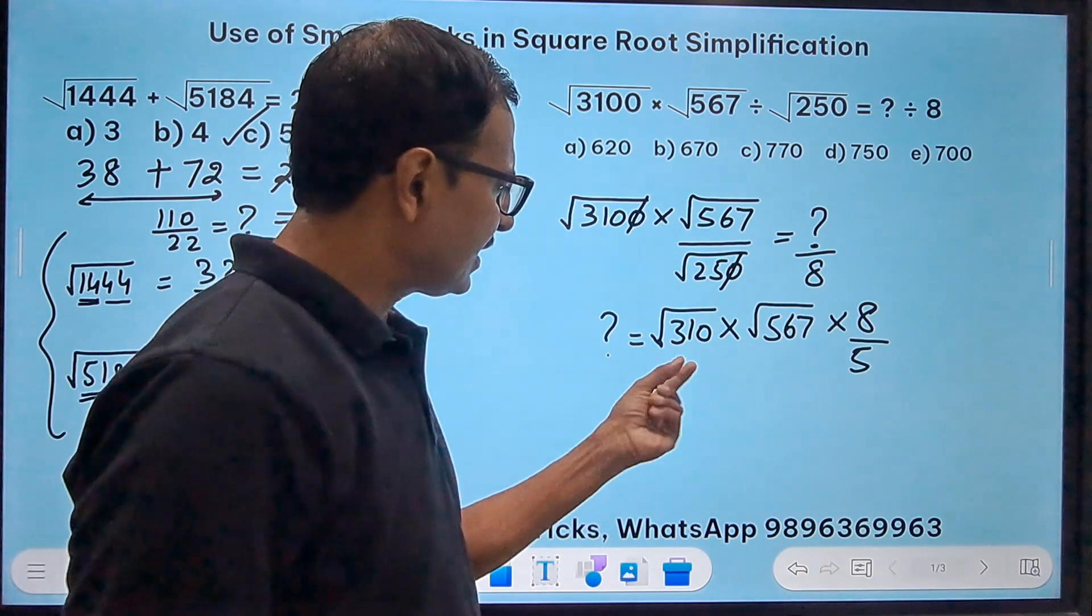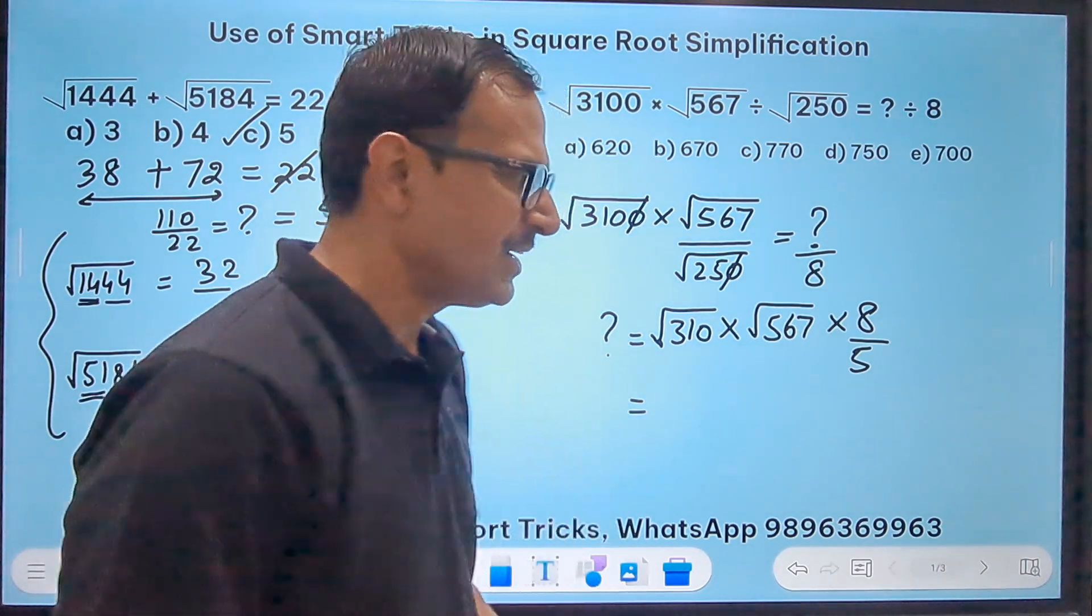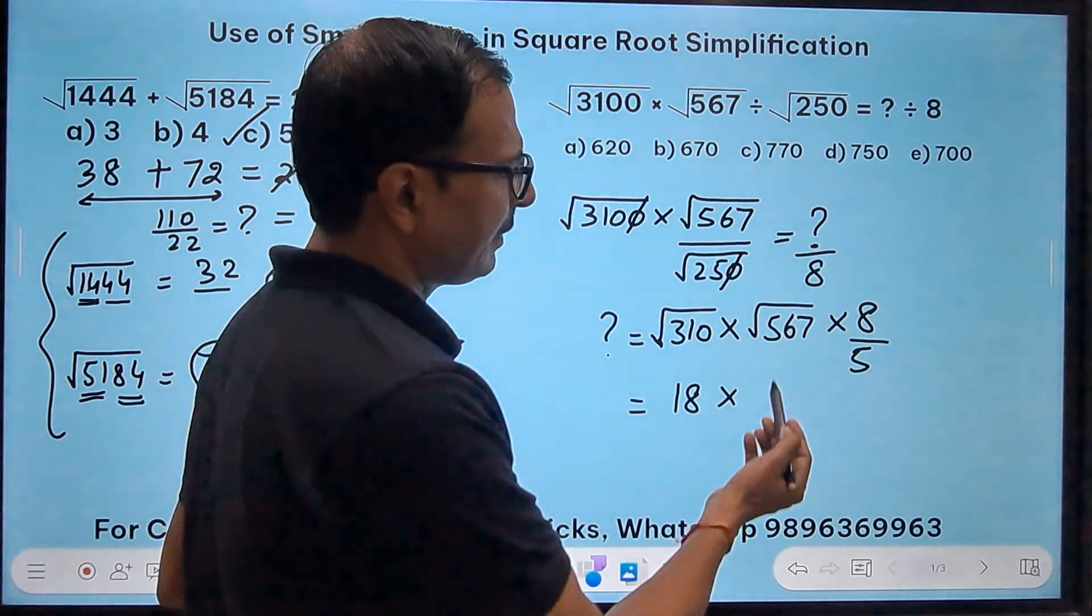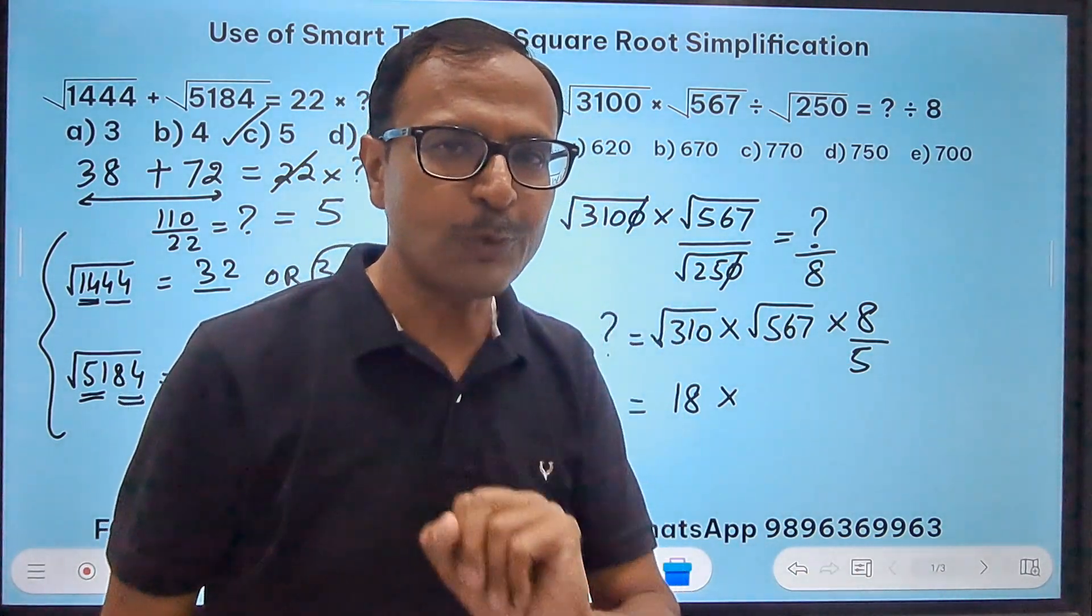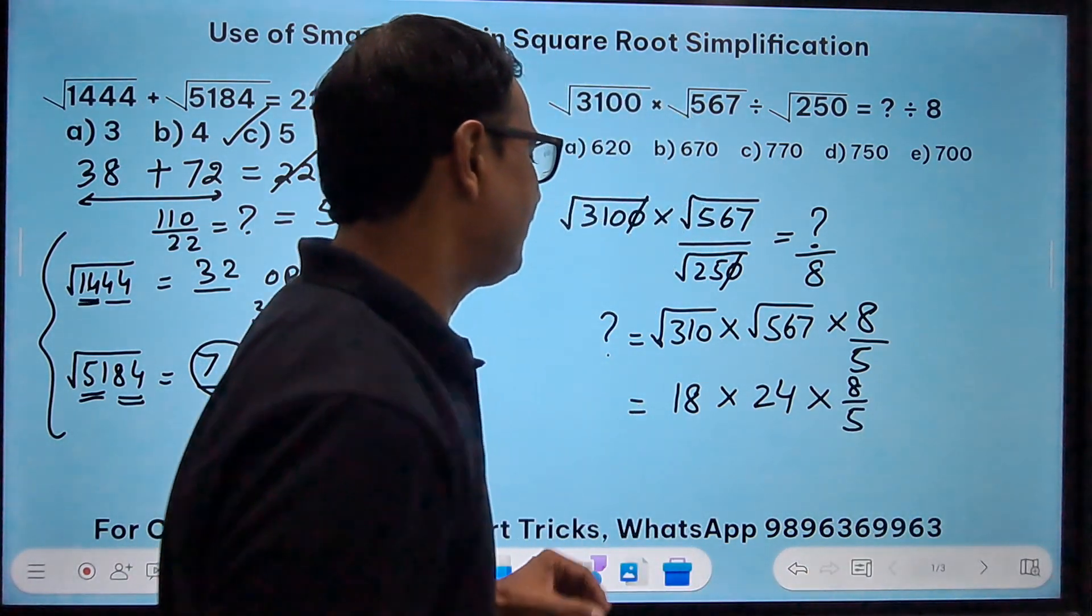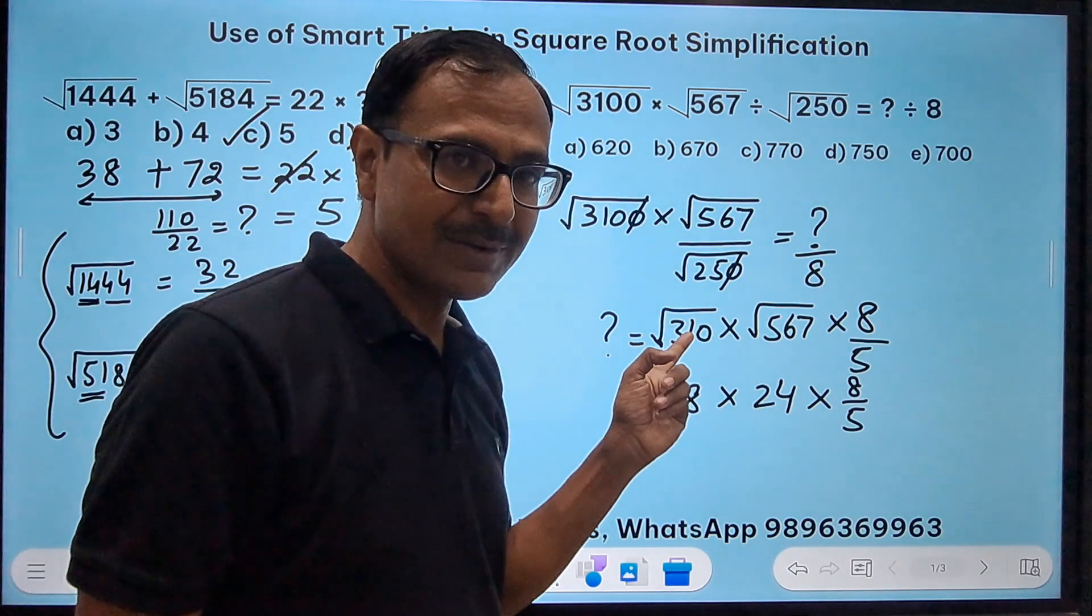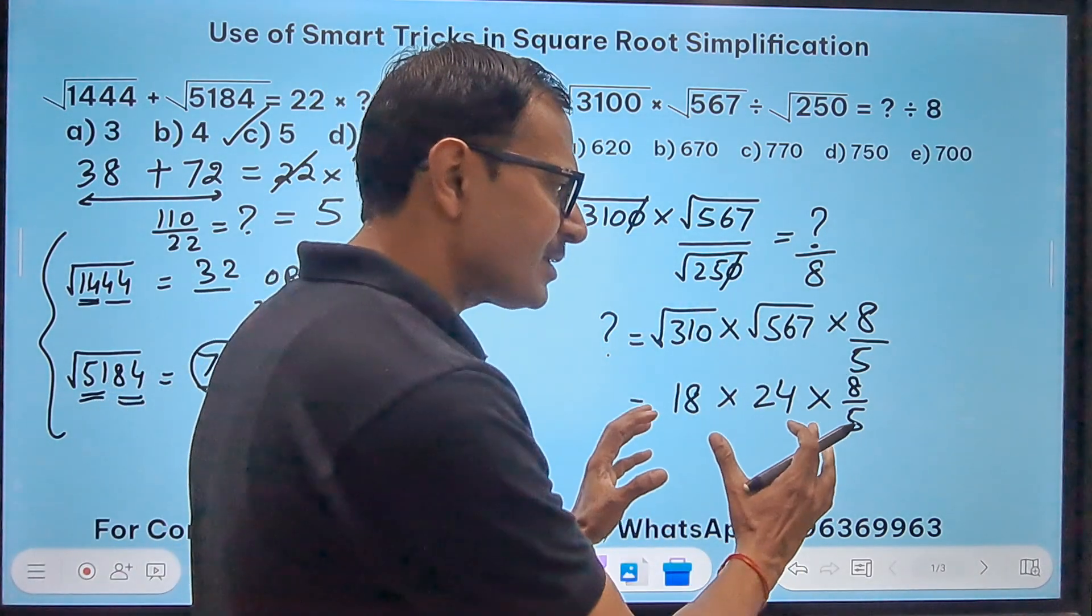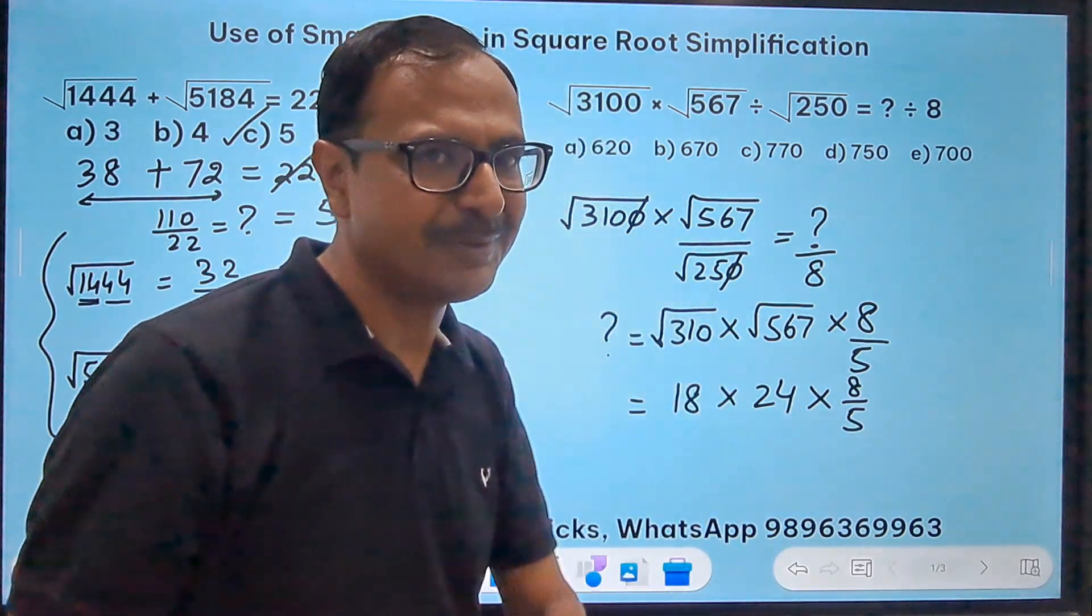Now let's approximate this. Let's increase this a bit. 310, what is the nearest perfect square? 324 is 18, right? So I will write this as approximately 18. And if I increase this slightly, what will be my answer? 576, I think that's a perfect square. 576 is 24 square. So I will approximate this as 24 times 8 upon 5. See, if I take this as 18, actually the square root of 310 is less than 18, because 324 is larger. And similarly here, square root of 567 will be less than 24. So my answer is actually coming out to be a little big. However, it is not that big, it is slightly less than that. Keep that in mind.